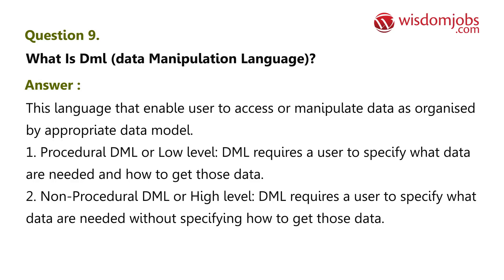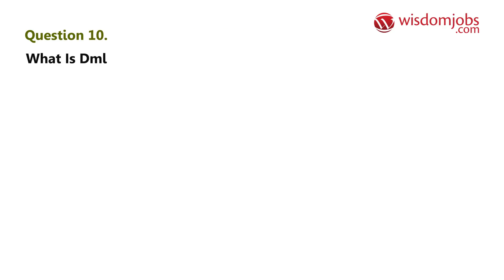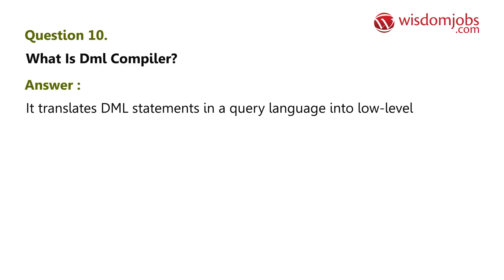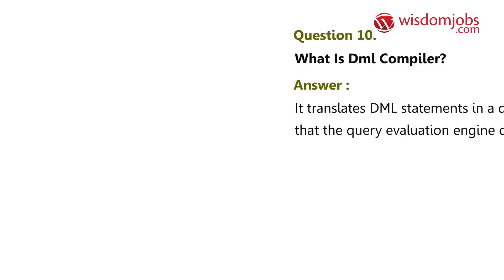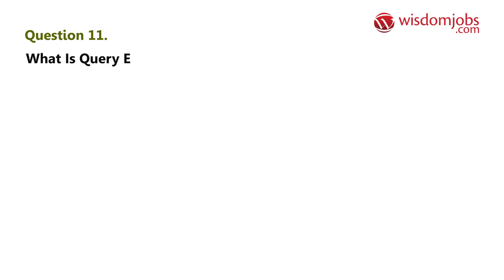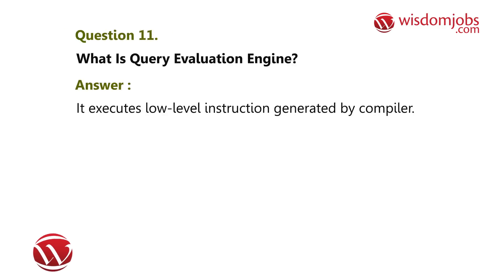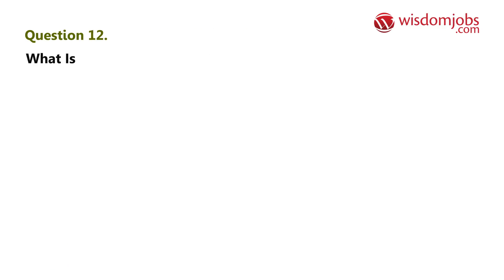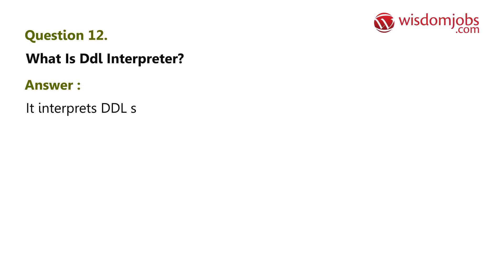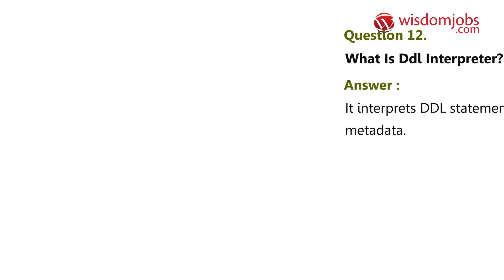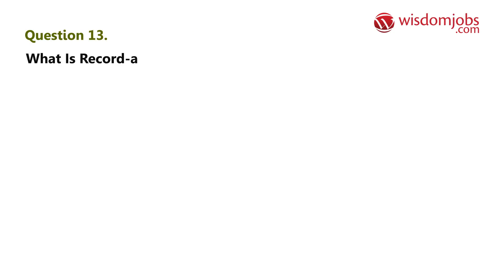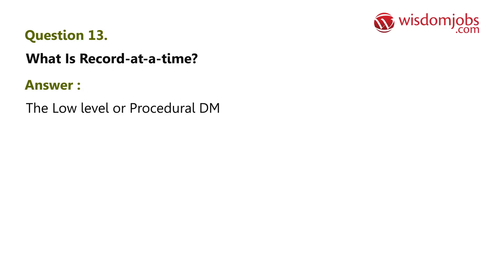Question 10: What is a DML compiler? Answer: It translates DML statements in a query language into low-level instructions that the query evaluation engine can understand. Question 11: What is a query evaluation engine? Answer: It executes low-level instructions generated by the compiler. Question 12: What is a DDL interpreter? Answer: It interprets DDL statements and records them in tables containing metadata.